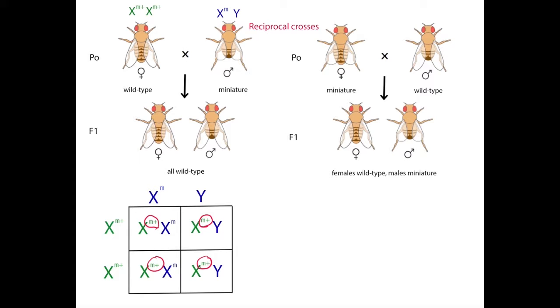Now let's look at the reciprocal cross 2. Our female parent in this case had two X chromosomes with the miniature allele m, and the male parent was Xm+ and Y. Here's the Punnett square for this cross.